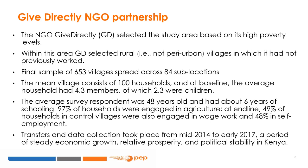Within the study area, the organization selected rural villages in which it had not previously worked, resulting in a final sample of 653 villages spread across 84 sub-locations in Kenya. The mean village has about 100 households with about 4.3 members and 2.3 children per household. The average survey respondent was about 48 years old with six years of schooling. 97% of these households were engaged in agriculture, and some also engaged in wage work and self-employment.